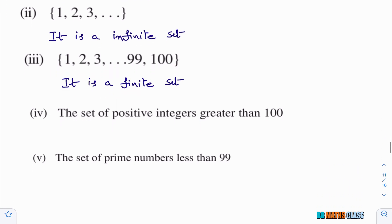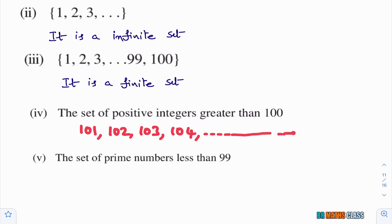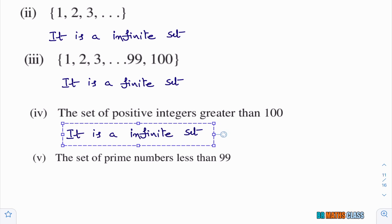Fourth bit: the set of positive integers greater than 100 — that is 101, 102, 103, 104, and so on. If we keep on writing, so many numbers we get. We can clearly say that it is an infinite set.